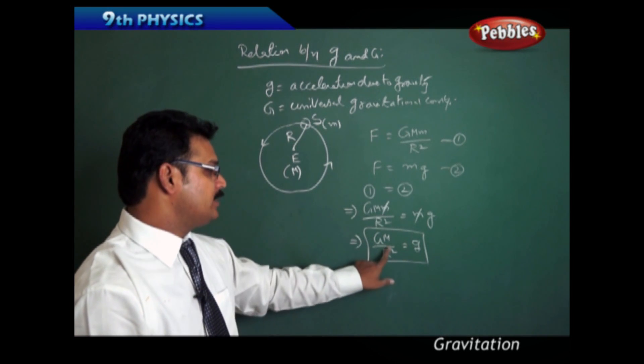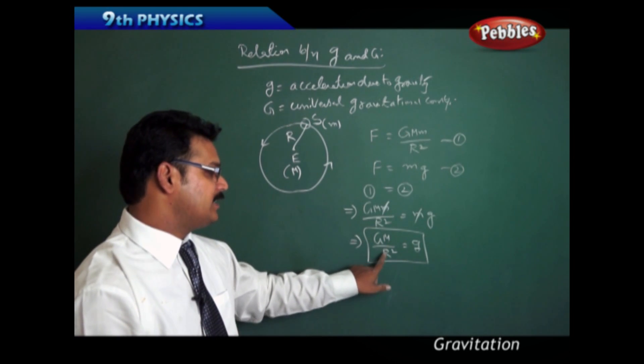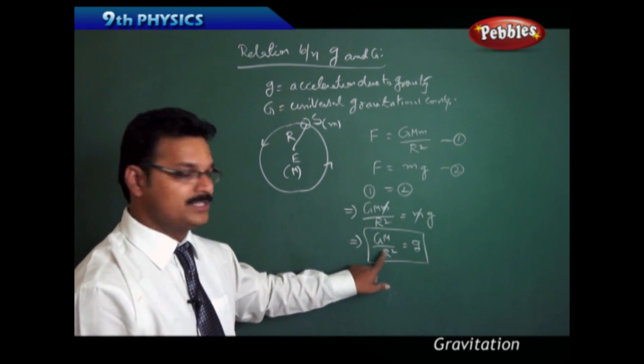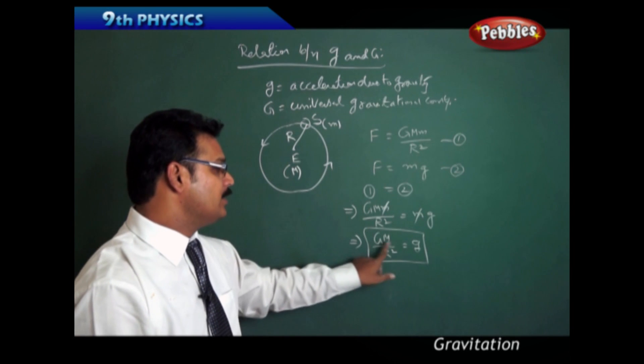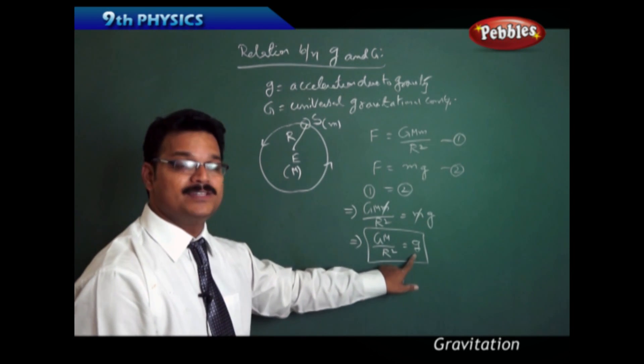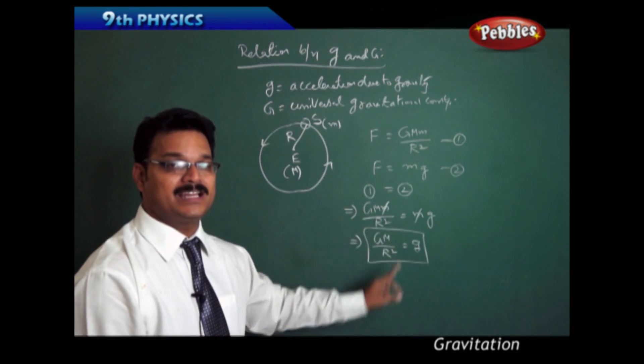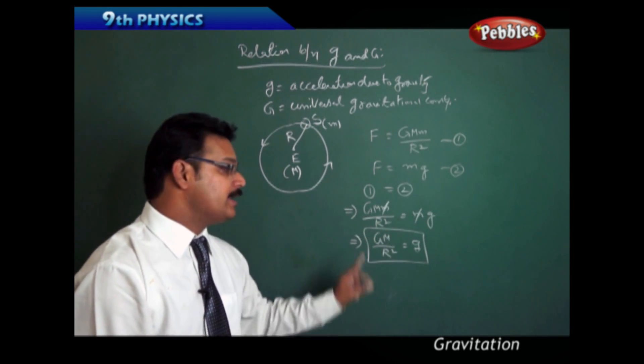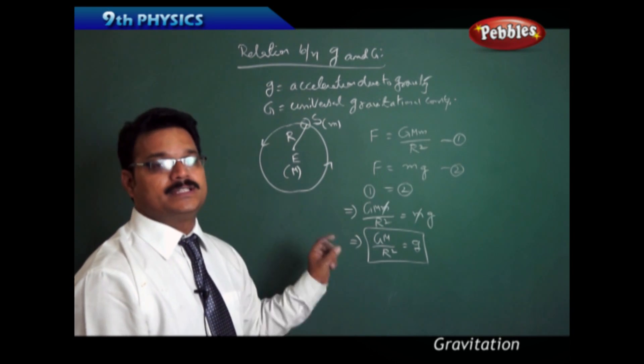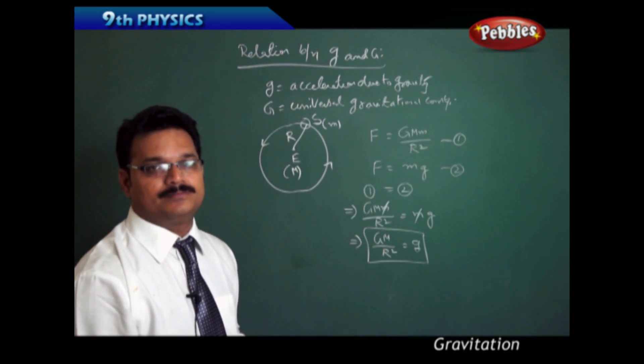By substituting the mass of the Earth, the radius of the Earth, and the value of G into g = GM/R², you can find the value of small g, which is exactly equal to 9.81 meters per second squared.